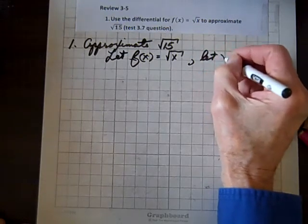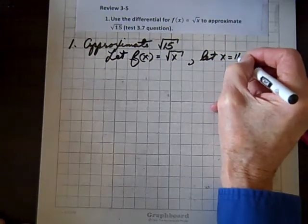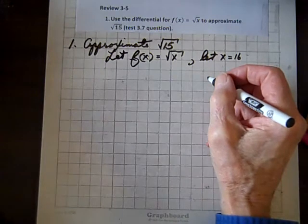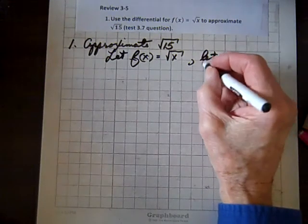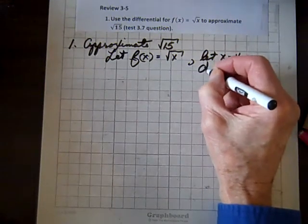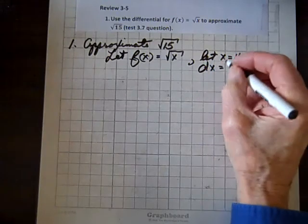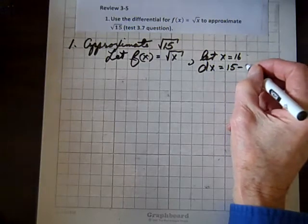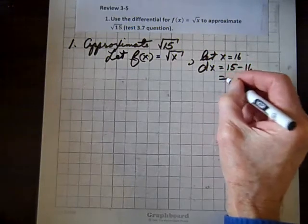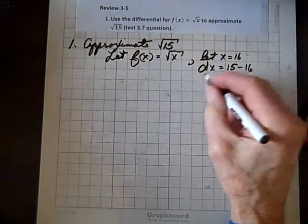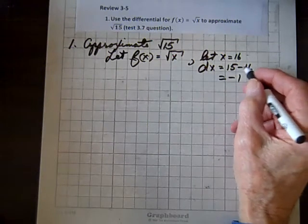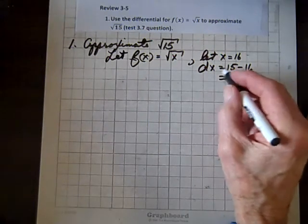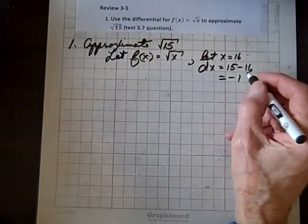So we're going to let x equal 16, and the difference between 15 and 16, dx, is going to equal 15 minus 16, which equals negative 1, so dx is negative 1. We have to subtract 1 to get from 15 to 16.